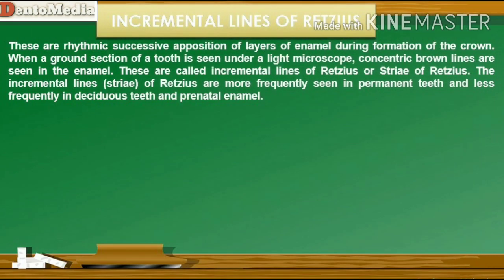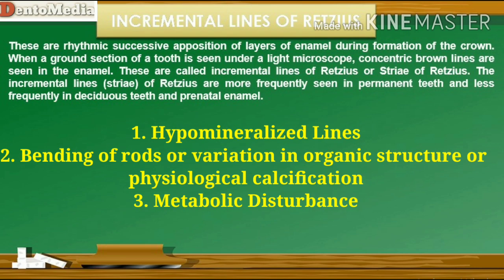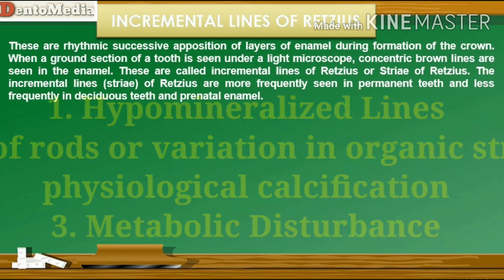A number of possible explanations have been put forward to explain the formation of these lines. According to some workers, these lines represent a hypomineralized or rhythmic formation of the enamel. Another explanation is periodic bending of the enamel rods — variations in the basic organic structure or in a physiological calcification rhythm could be another possible reason. The occurrence of a few incremental lines or striae is considered normal, but when they are present in great number or as a broad band, it indicates periods of metabolic disturbance or disturbance in amelogenesis.